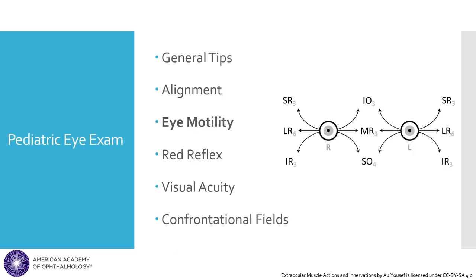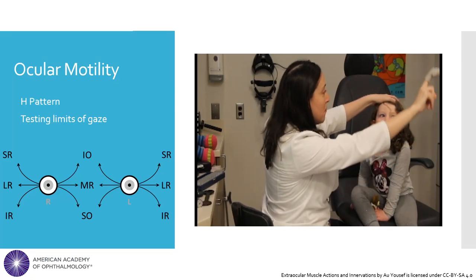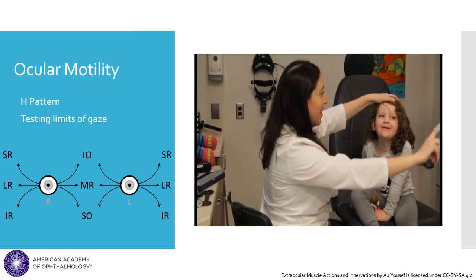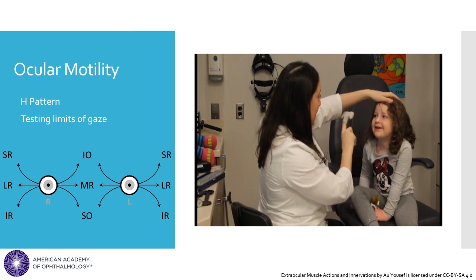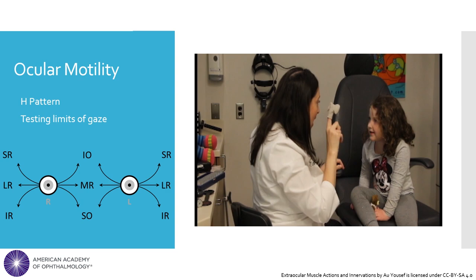Extraocular movement can be assessed by moving a fixation target, such as a toy or the tip of a finger, in an H pattern. This pattern is useful because holding each position in the H relies primarily on the action of one extraocular muscle. For example, if a patient could not hold a leftward gaze in their left eye, this would suggest some problem with the action of the left lateral rectus muscle. In the adult exam, the patient is asked to keep their head still while moving only their eyes. However, in the pediatric exam, it may be easier to simply allow a child to move their head with the exam and test the limits of their gaze.